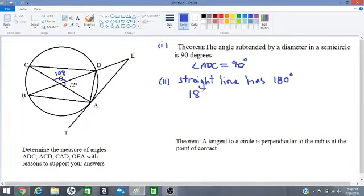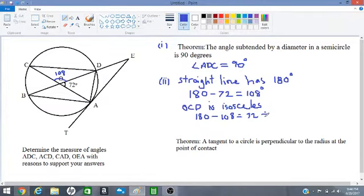Now we must observe that this triangle OCD has two radii as lengths, and therefore two of the lengths are equal, meaning these two base angles are also equal. This is an isosceles triangle. So 180 subtract 108 equals 72, and then divide 72 by 2 to get 36. Therefore this equals angle ACD, the answer for part 2.